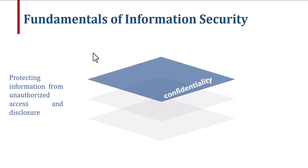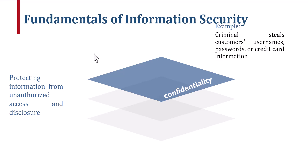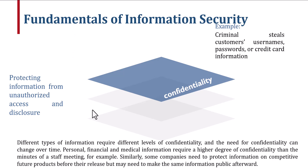First pillar: confidentiality. Confidentiality ensures that only authorized individuals can access sensitive information. For example, a criminal steals customers' usernames, passwords, or credit card information. Different types of information require different levels of confidentiality, and the need for confidentiality can change over time. Personal, financial, and medical information require a higher degree of confidentiality than the minutes of a staff meeting, for example.